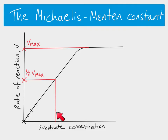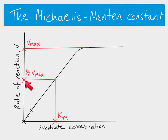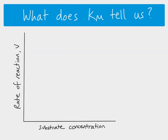If you then come down and see the substrate concentration at which you would get half of Vmax, that substrate concentration is known as Km, or the Michaelis-Menten constant. So Km is a substrate concentration — specifically, the substrate concentration which will give you half of the maximum rate of reaction for that particular enzyme. That's how we calculate Km, but what does that then tell us?